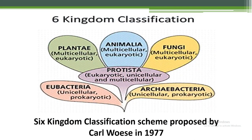These are the six kingdoms as shown in the figure. Kingdom Plantae is multicellular and eukaryotic. Animalia is multicellular and eukaryotic. Fungi is multicellular and eukaryotic. Protista is eukaryotic, unicellular, and multicellular. Eubacteria is unicellular and prokaryotic. Archaebacteria is unicellular and prokaryotic.